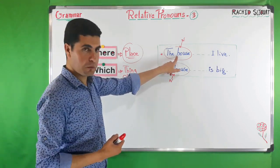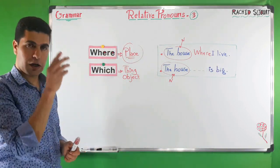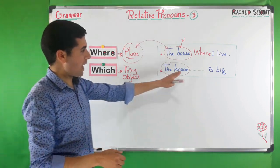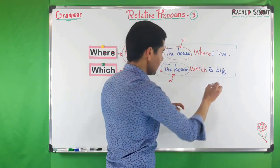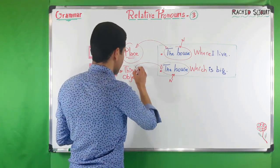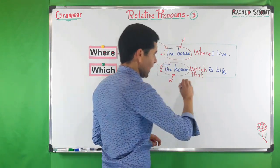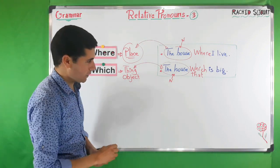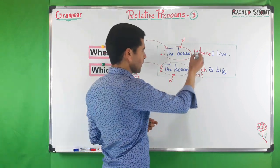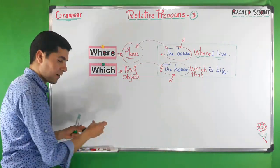In number one: 'The house where I live.' Here we are talking about the house as a place. In number two: 'The house which is big.' Here we are talking about the house as a thing or an object. We can also say 'the house that is big.' Where has to do with something that we do in the place — we live inside the house.